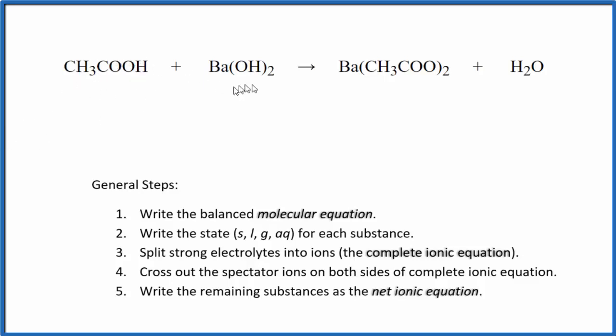So we have our acetic acid and our barium hydroxide. We're going to write the net ionic equation. One of the first things we do is we need to balance the molecular equation. This is our molecular equation. It looks like we could put a 2 here and a 2 in front of the water, and that would balance the equation.